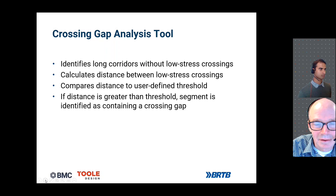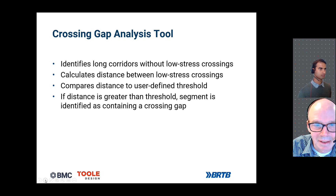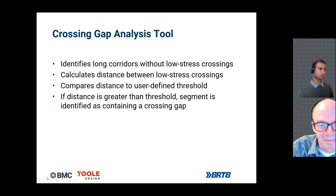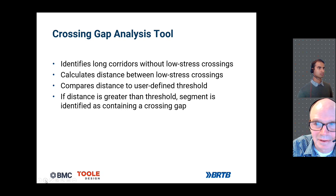The Crossing Gap Analysis Tool identifies long corridors without low-stress crossings. It identifies these corridors by calculating the distance between low-stress crossings, comparing that distance to a user-defined threshold. If the distance is greater than the threshold, the segment is identified as containing a crossing gap.